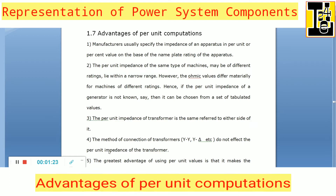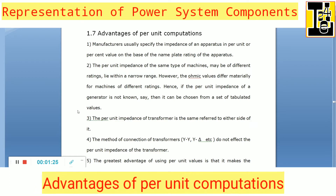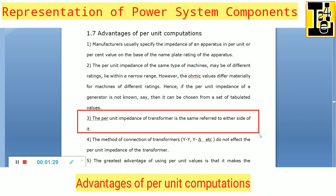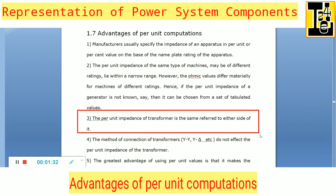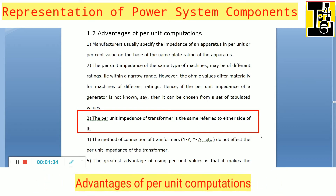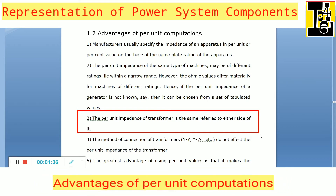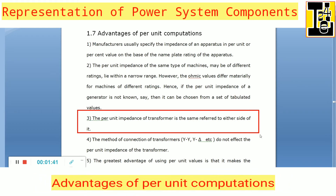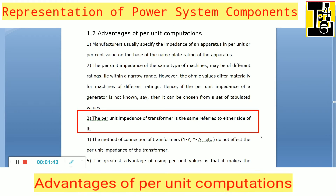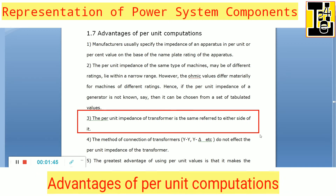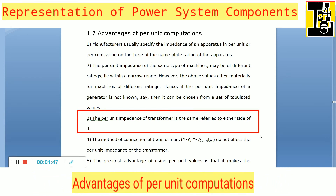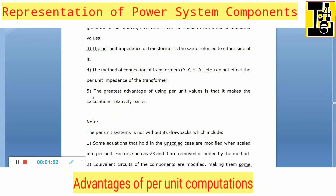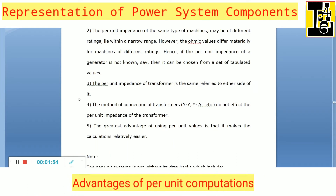The third advantage is that the per unit impedance of a transformer is the same when referred to either side of it. So whether you calculate the per unit impedance or reactance at the primary side or at the secondary side, the per unit reactance will always be the same, irrespective of the side at which it is measured or calculated.